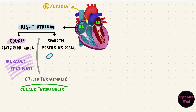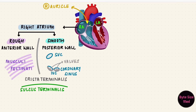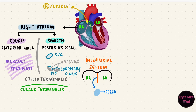The Crista terminalis creates a groove on the external surface called the sulcus terminalis. The right atrium has openings for the superior vena cava, which brings blood from the upper parts of the body, the inferior vena cava, which brings blood from the lower parts of the body, and the coronary sinus, which drains venous blood from the heart itself. These open on the smooth posterior wall, and the openings of the inferior vena cava and the coronary sinus have valves. The right atrium is separated from the left by a septum, and this interatrial septum has an oval depression called the fossa ovalis, with a raised rim called the limbus of the fossa ovalis, also called the annulus ovalis.